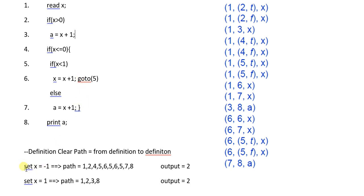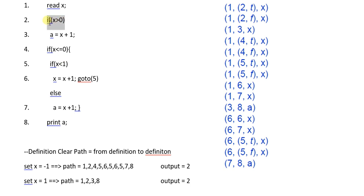First of all we set the variable x with value minus one. When we set x as minus one, we come at statement number one, then at statement number two. Since x is minus one, statement number two is false, so we will not come at statement number three.